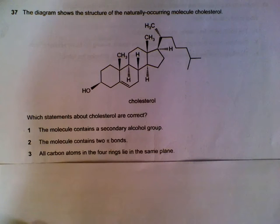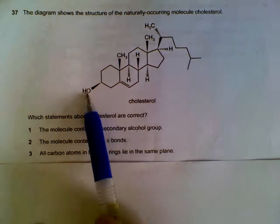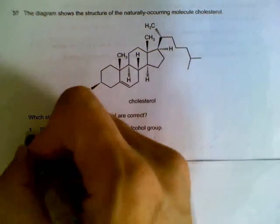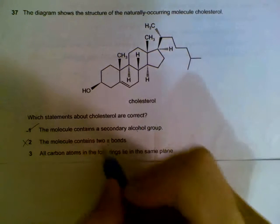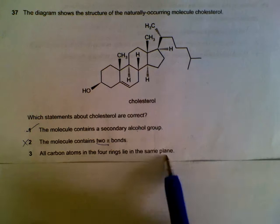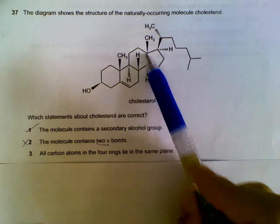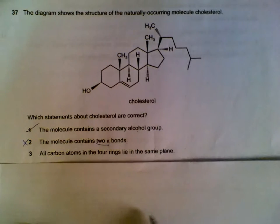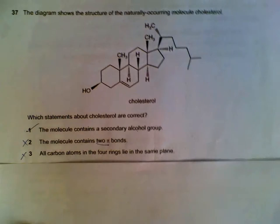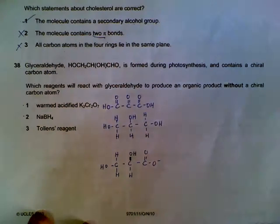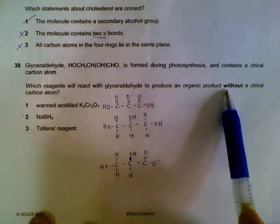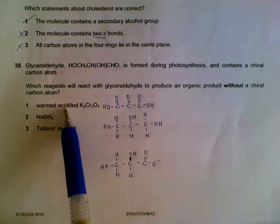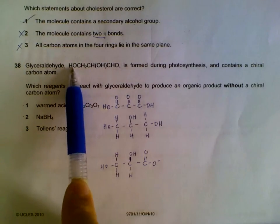Question 37. Which of the statements about cholesterol is correct? It's a secondary alcohol. This alcohol is secondary. Contains two pi bonds? That's incorrect. It only contains one pi bond. All carbon atoms in the four rings lie on the same plane? These carbons are all tetrahedrically joined to each other, so they won't be able to lie on the same plane.